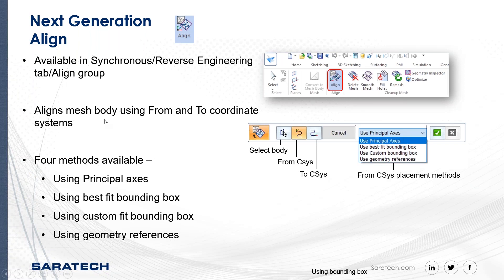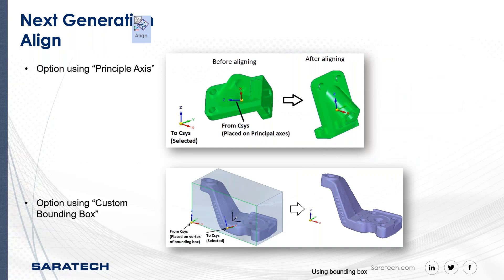The Align Mesh Body feature uses a from or to coordinate system. You can see the from/to option, where I can use the principal axis, or I can use the best fit bounding box, or use a custom bounding box. Here are a couple of examples — here's what it looks like using the principal axis with from and to, and then we have the custom box option.